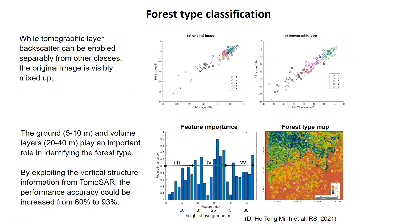Let's look at the performance. The behavior of co-pol and cross-pol backscattering coefficient is compared between the original image and the tomography layer at 35 meters. They vary strongly in class 1, which will be easy to classify. On the other hand, while the tomographic layer still allows us to separate all classes, the original image is visibly mixed up. By exploiting the vertical structure information from tomography, classification accuracy could be increased by up to 30%.